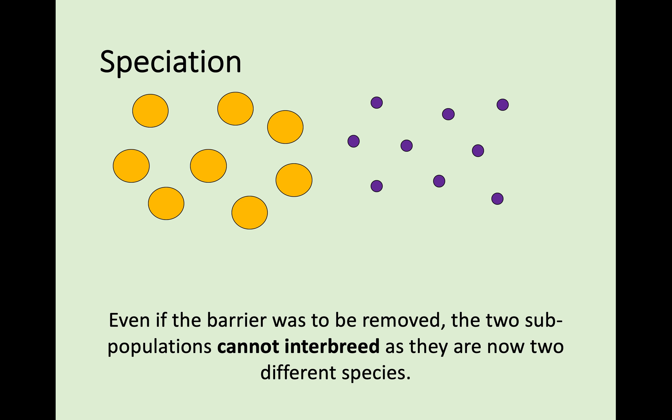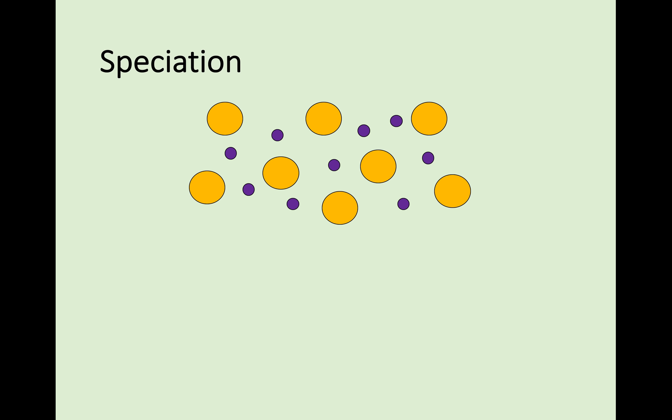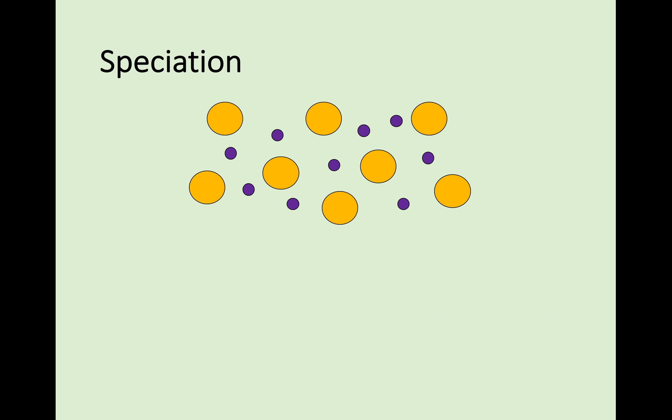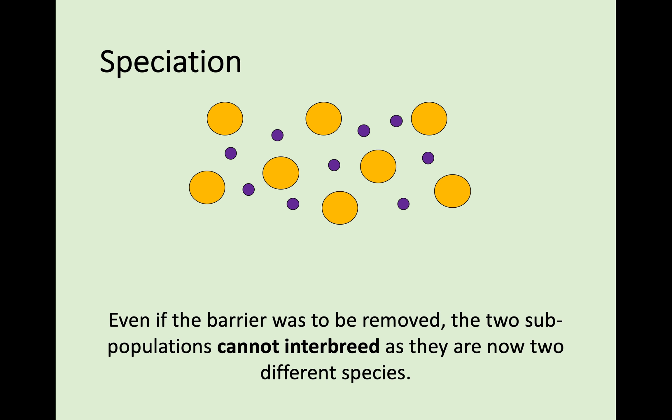Even if the mountain range disappeared and the two subpopulations were able to meet again, they would no longer be able to interbreed as they are two different species. Remember, if they interbreed but cannot produce fertile offspring, they are no longer of the same species. This is how we end up with two different species from one original species.